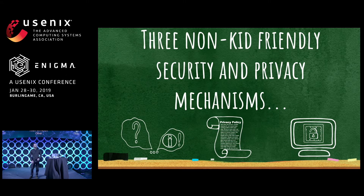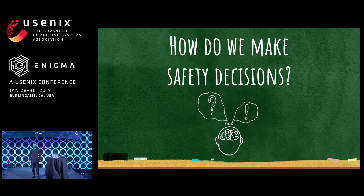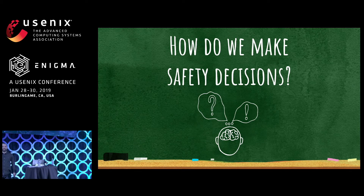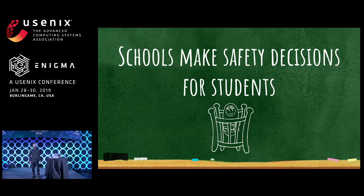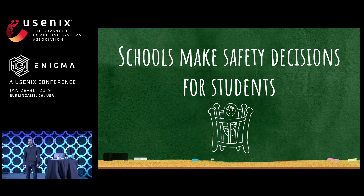I'd like to talk about three non-kid-friendly security and privacy mechanisms. The prefrontal cortex is the part of the brain implicated in complex decision-making, planning, and social interaction, and it's not fully developed until around age 25. That's why kids don't vote, decide what they eat for dinner, or decide if they can go on a field trip. Adults act as surrogate decision-makers for kids, especially for safety decisions. In the school context, school officials make safety decisions for kids, and this should include decisions about how they share their data — but it often doesn't, because the tools we give them don't support it.